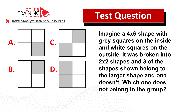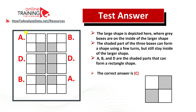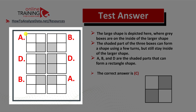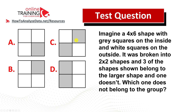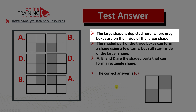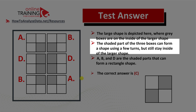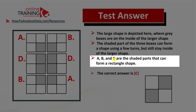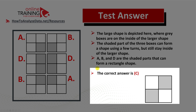Let's continue to see if we can solve this challenge together. The 4 by 6 shape has gray boxes on the inside and white boxes on the outside, and it was broken down into 2 by 2 shapes. Choice A is represented in the bottom right corner. Choices B are in opposite corners and choice D is in the middle. But choice C is not represented anywhere in the shape. So the correct answer is choice C. The shaded part of three boxes can form a shape using a few turns but still stay inside the larger shape — this is why choices A, B, and D are valid, and choice C is the one you should be selecting.